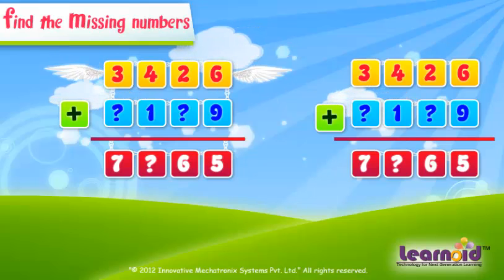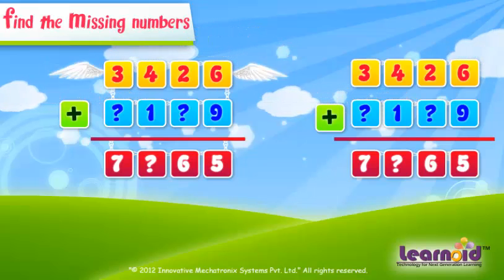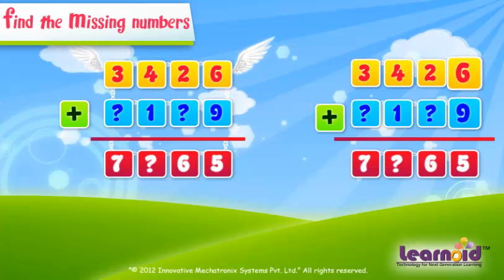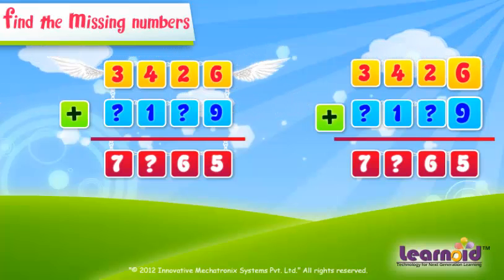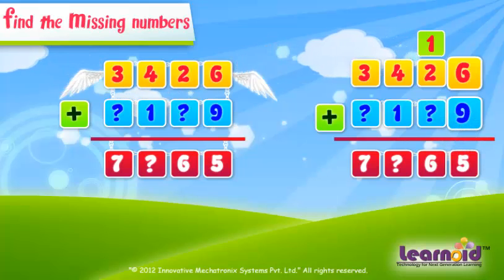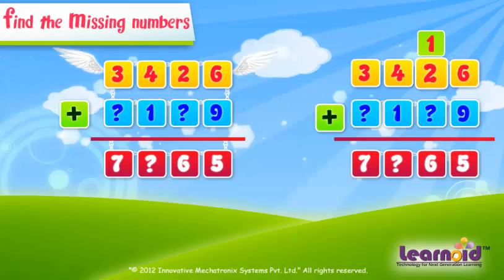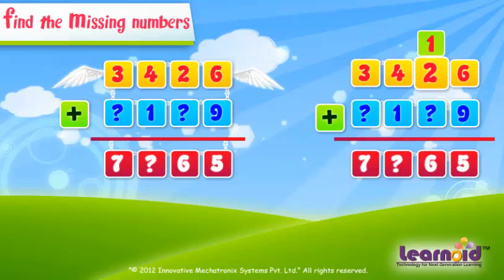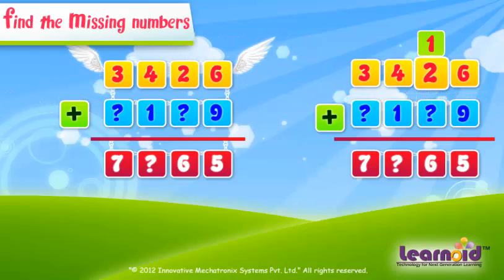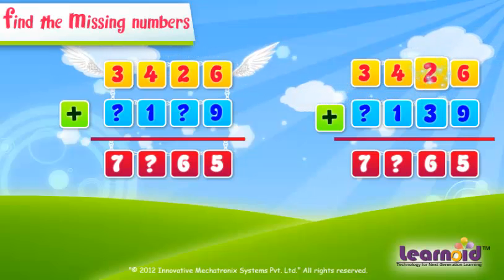To find the missing digits, first add the digits in the 1's column. 6 plus 9 is 15. In the 10's column, 2 plus carry 1 is equal to 3. To get 6, we have to add 3.